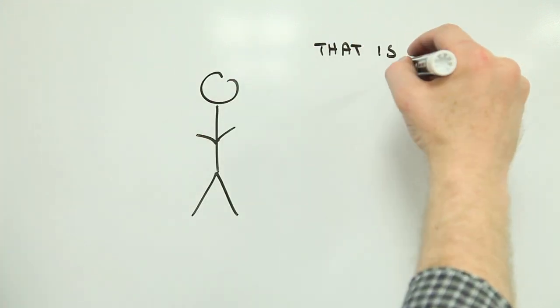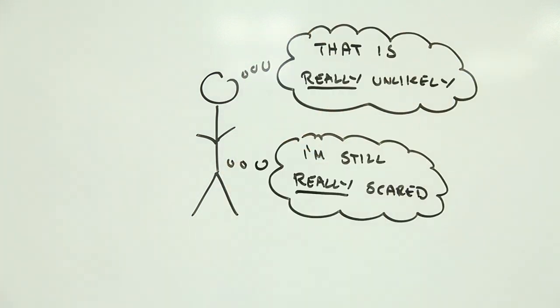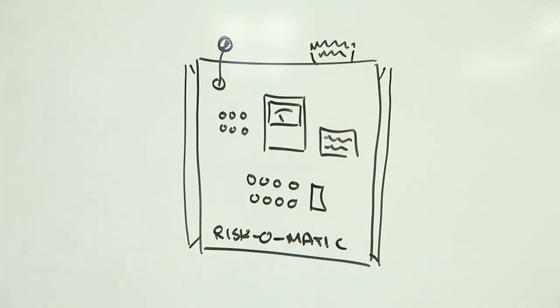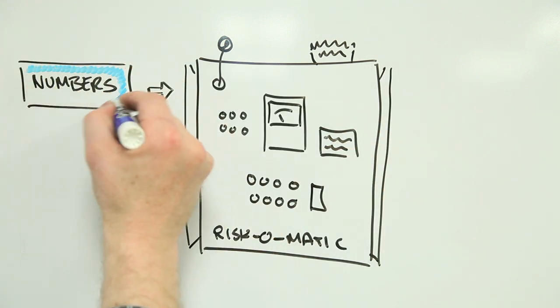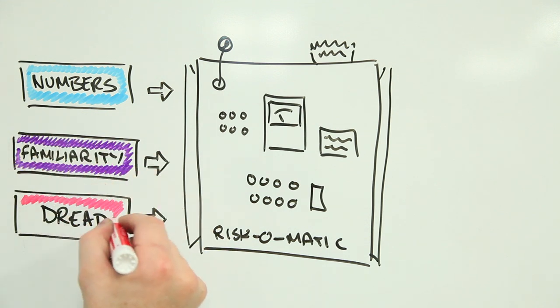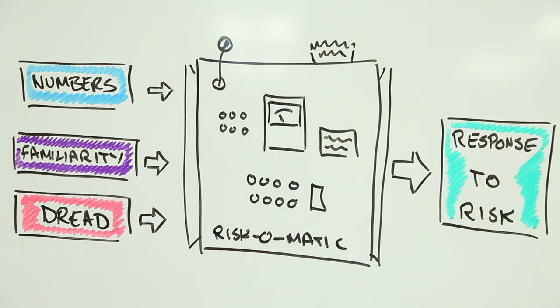But even if they don't actually happen very often, we tend to be really afraid of them. So, our feelings about risks come from both how much we know about the risk and whether the risk is something we dread. That's right. And those risky feelings can have a big impact on how we decide to deal with risk.